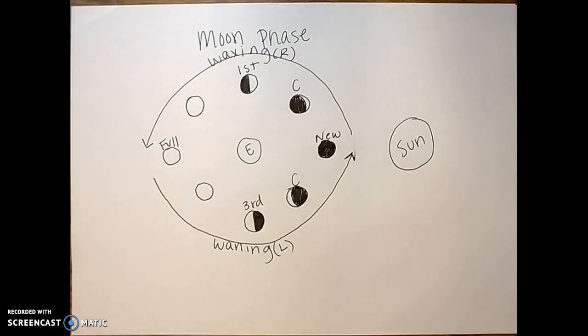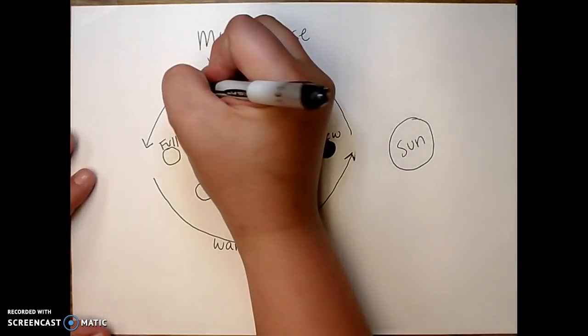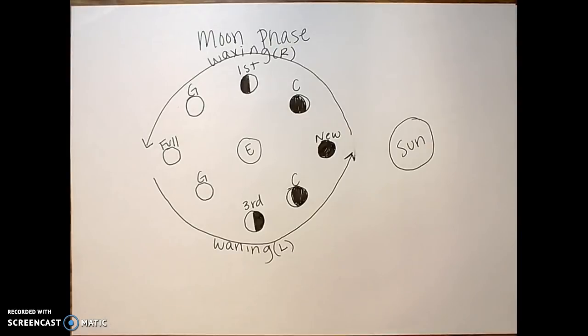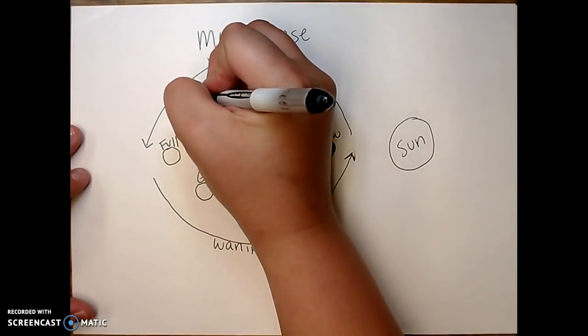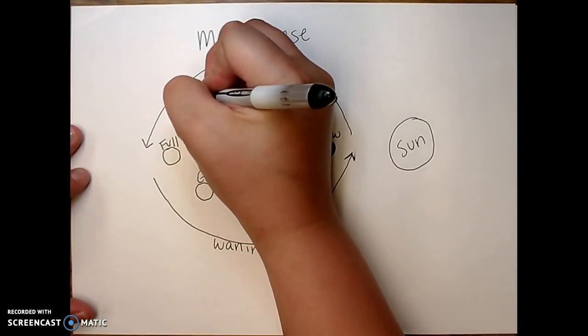Next, I'm going to do my gibbuses. And I need to remember that my gibbuses are mostly bright, or they're more than halfway bright. So they're going to be closest to my all bright phase, or the full moon. So I'm going to go ahead and shade these in.